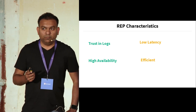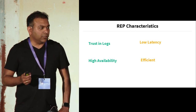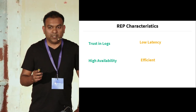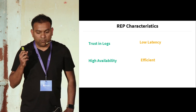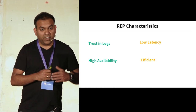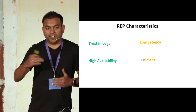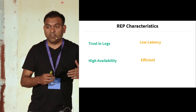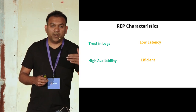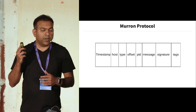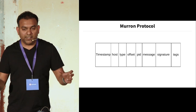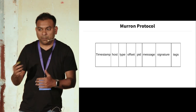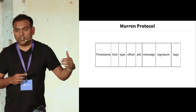We took a step back to see what it really means to build a data pipeline: trustworthy logs, low latency, high availability, and an efficient system. To build trust in data, we need to capture metadata information around when an event originated, who originated it, and how it gets transformed across the pipeline. We can't expect application developers or log producers to give us all that metadata information, so we created a protocol called the Marin Protocol — essentially a set of metadata fields and a format for packaging logs before shipping them to our pipeline.